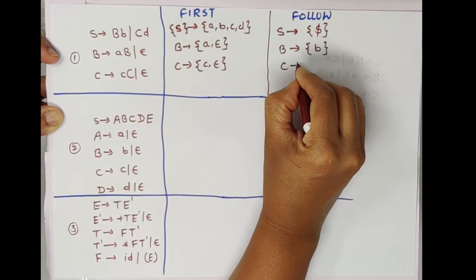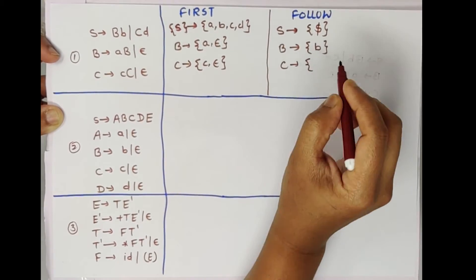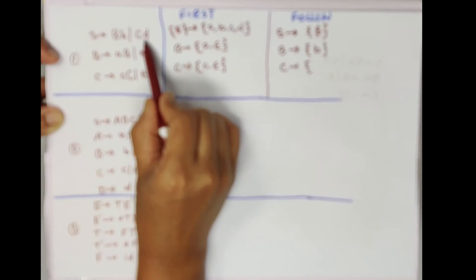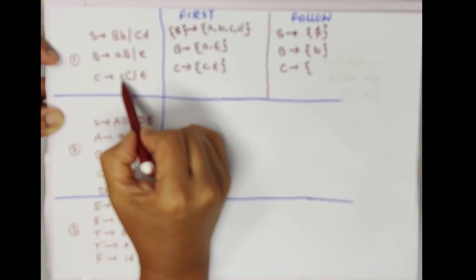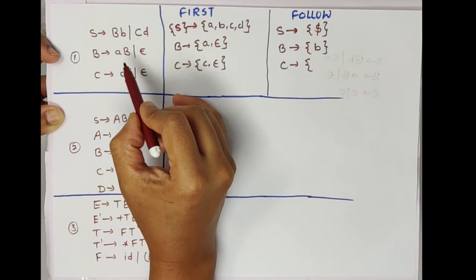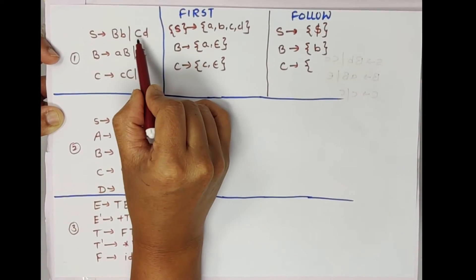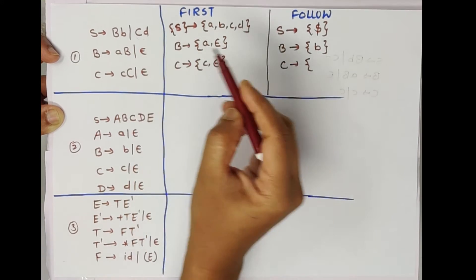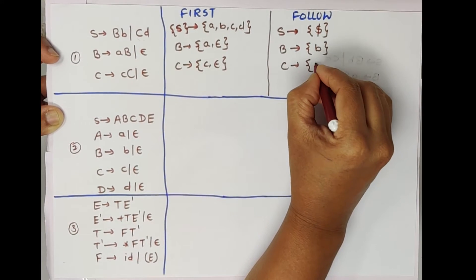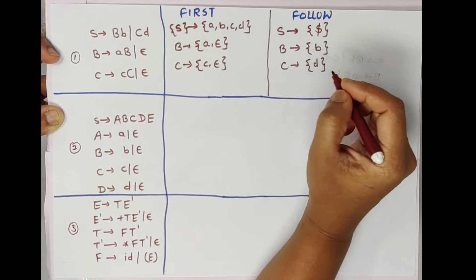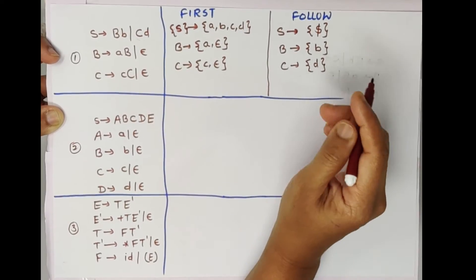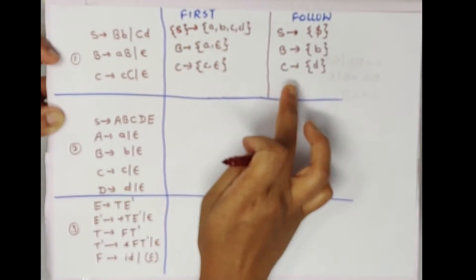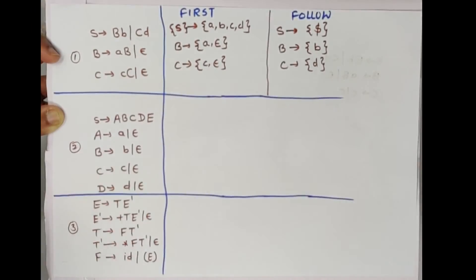Now we will find FOLLOW(C). C is present in the production S → CD. Who is following capital C? Small d. So d will be in FOLLOW(C). In this way, we can find out the FIRST and FOLLOW for this first example.